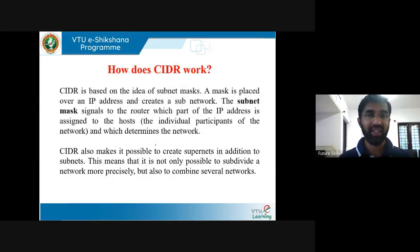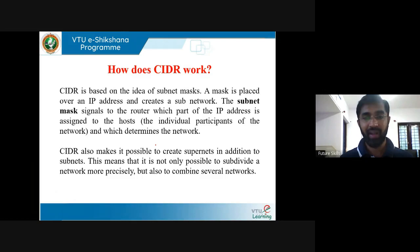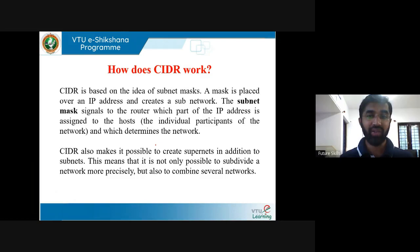How does CIDR work? CIDR is based on the idea of subnet mask. Every class has its own default subnet mask. A mask is placed over an IP address to create a subnet. The subnet mask signals to the router which part of the IP address is assigned to the host and which determines the network. CIDR also makes it possible to create supernets in addition to subnets — you can subdivide a network more precisely or combine several networks into one.